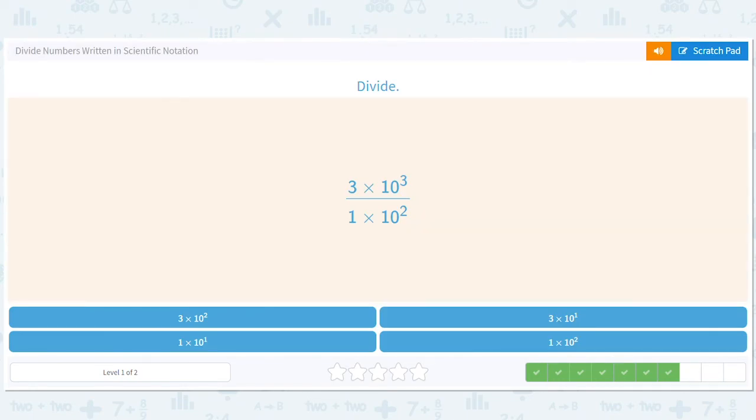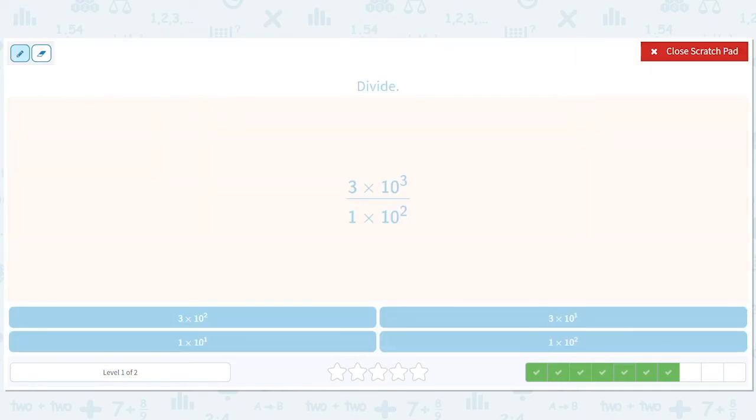All right, how about this? Well, 3 divided by 1 is 3. 3 minus 2 is 1. So we have 3 times 10 to the first or 3 minus 2. So 3 times 10 to the first.